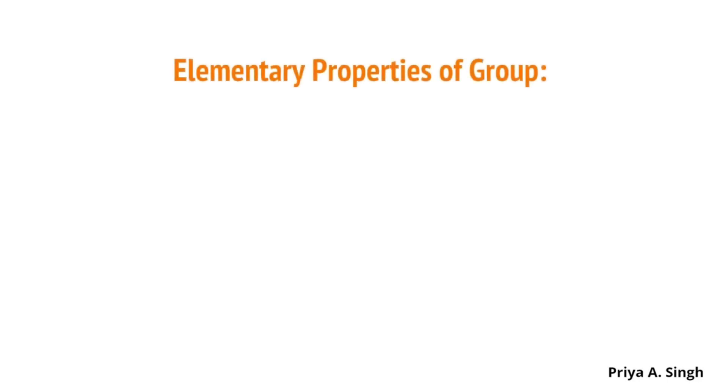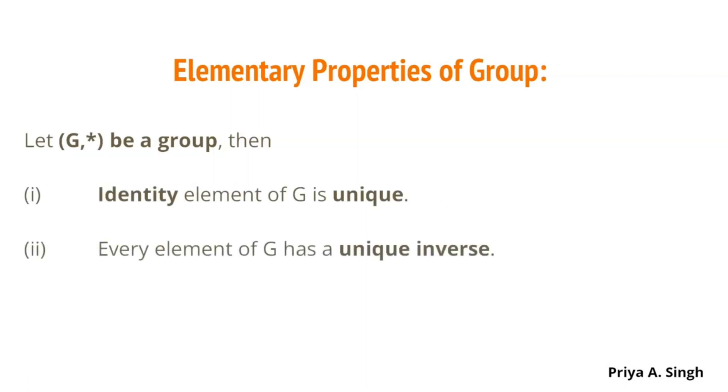Elementary properties of a group. If (G,*) is a group, then identity element of G is unique. Every element of G has a unique inverse, where the unique inverse of any element A is denoted by A inverse. Now, let us see few examples.